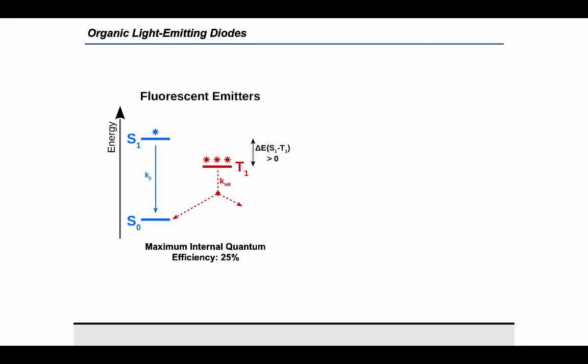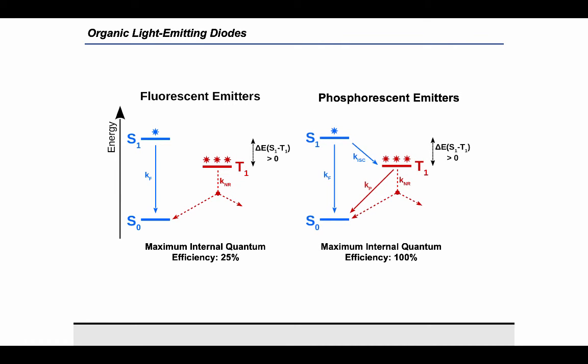The first generation of emissive materials for OLEDs were fluorescent emitters. In these molecules, light production was solely taking place via fluorescence. The triplet excitons were not harvested for light production, limiting the internal quantum efficiency to 25%.